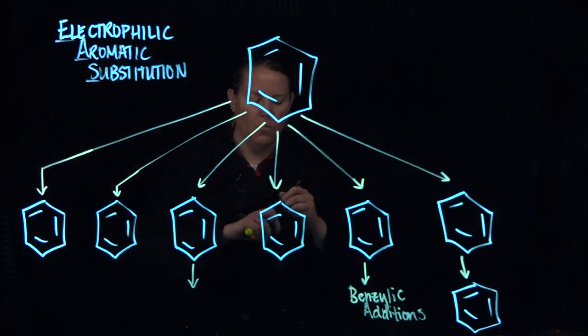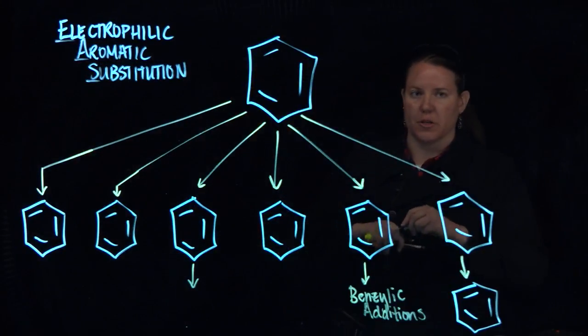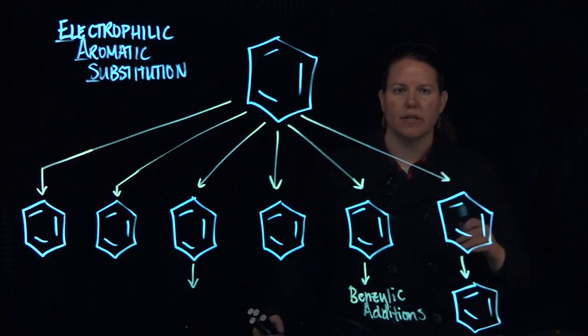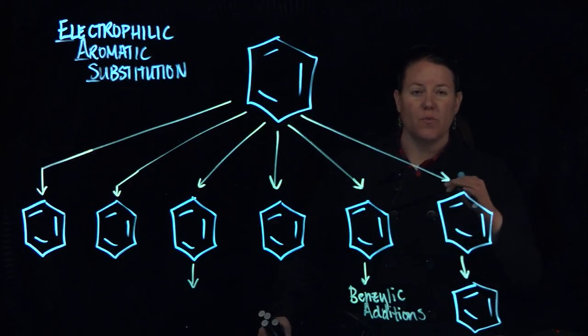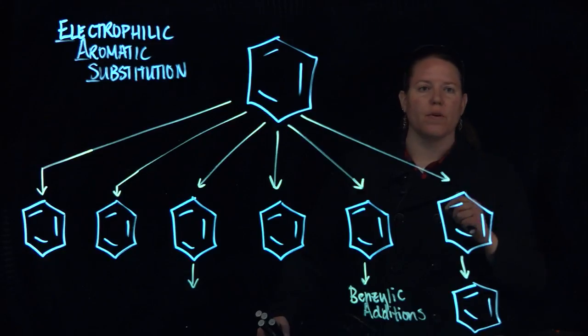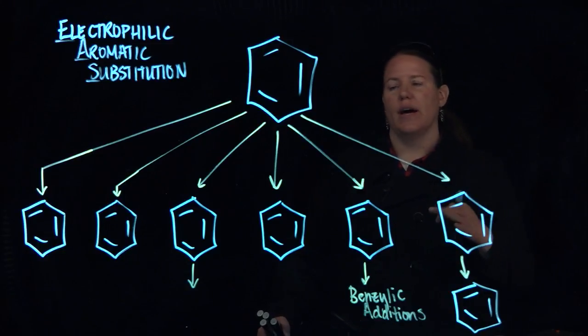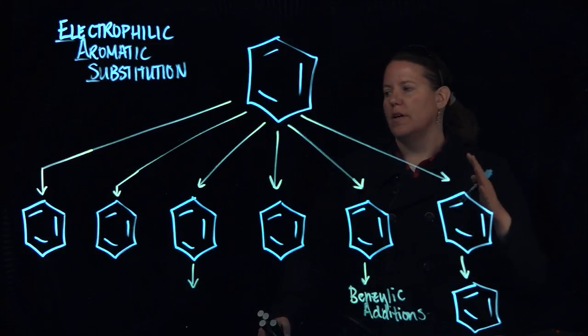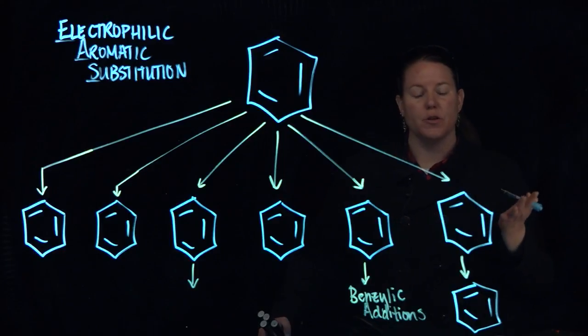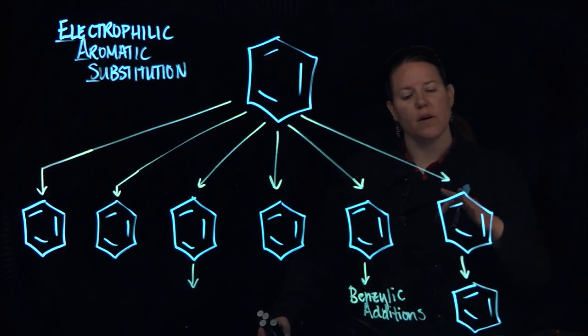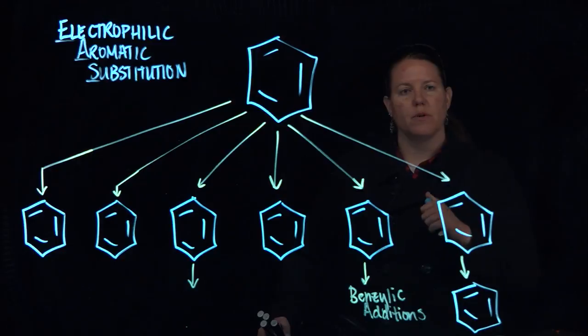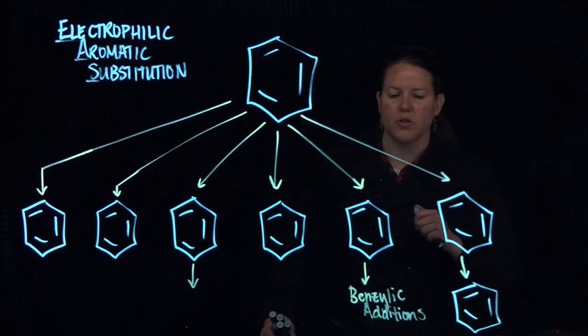So why do we make these big charts like this? The reason why we make big charts like this is because it really shows the power of these kinds of reactions. So let's talk about all the things you can do with the benzene ring and they're all going to follow the mechanism we did in the intro to electrophilic aromatic substitution.